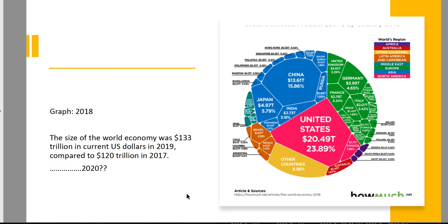Get an idea of where we were and where we were headed before the pandemic. As you can see by the graph on the right, the United States makes up almost a quarter of the world's economy, with China close behind. This graph is from 2018 data, broken up into regions. You can see Japan as a big player, India, Germany, a lot of other countries. Latin America is much smaller. Countries in Europe together are a huge part of the global economy, as is Asia all together.